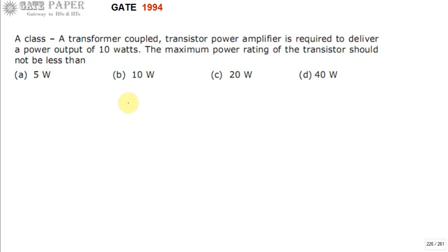We know that there are three different types of power amplifiers: Class A, Class B, and Class C — even though we also have Class D and Class S. We are not covering those, and these three are classified based on where the transistor is biased.